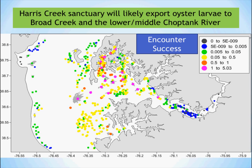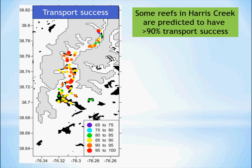The dots represent oyster reefs and are color coded according to their encounter success. The ones that are orange and pink represent places where the Harris Creek Sanctuary will export a lot of larvae and benefit not just Harris Creek Sanctuary, but the entire Choptank River, or at least the lower river. The larval transport model also predicts the transport success of each oyster reef within Harris Creek Sanctuary.